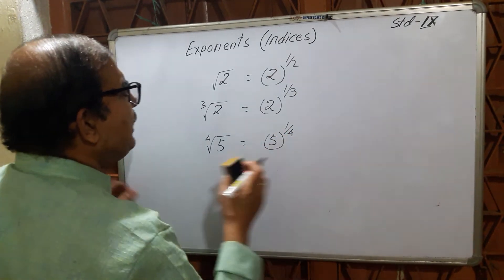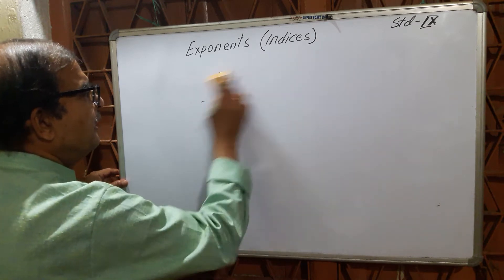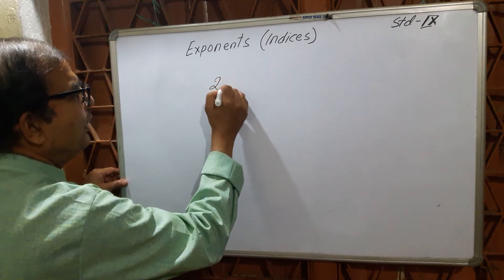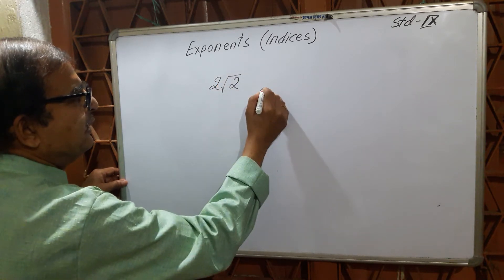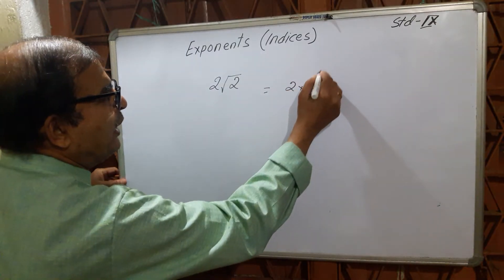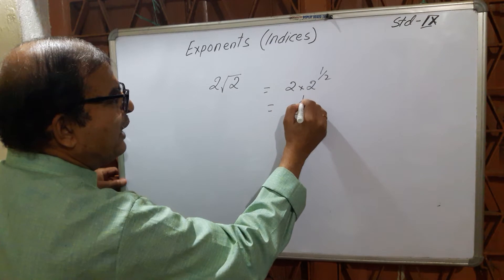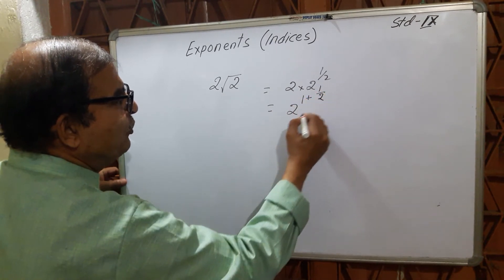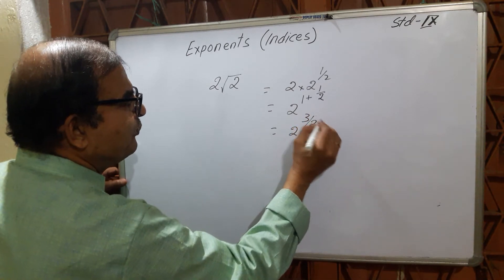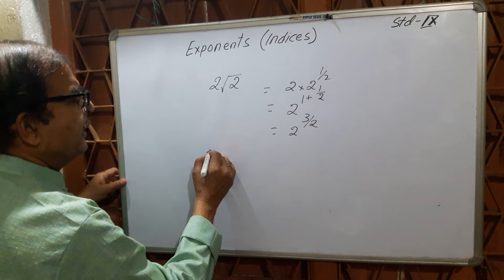Now if the question is 2 × √2, this is 2 × 2^(1/2). You can write the exponent as 1 + 1/2, which gives 2^(3/2). So 2 × √2 = 2^(3/2).